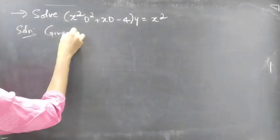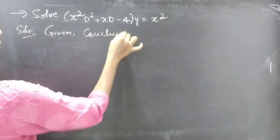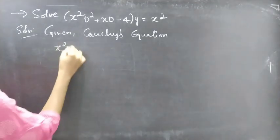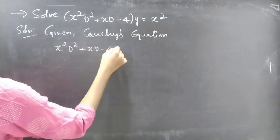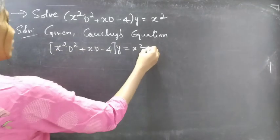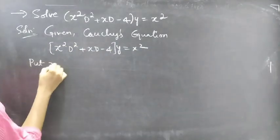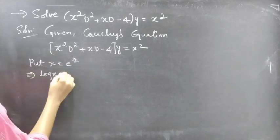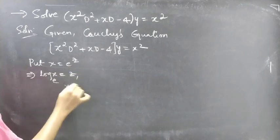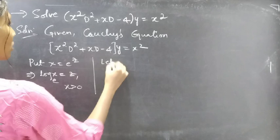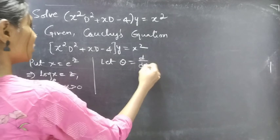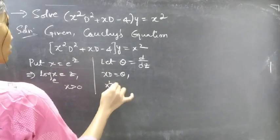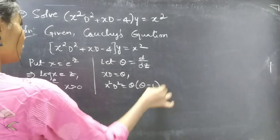Given Cauchy's equation: x squared D squared plus x D minus 4 into y equals x squared. Put x equals e to the power z, then log x equals z, for x greater than 0. Let theta equal d by dz, where theta is a differential operator with independent variable z. Then x D equals theta, and x squared D squared equals theta times theta minus 1.